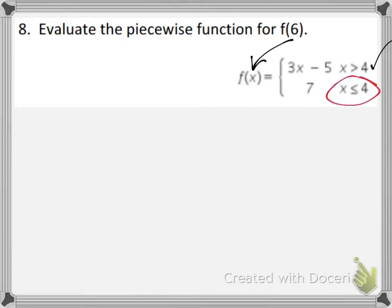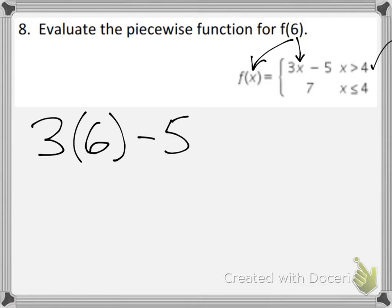And because 6 is greater than 4, we have to use the top equation. So you simply plug in 6 for x. 3 times 6 minus 5, you get 18. And 18 minus 5 is 13. That's all you had to do.